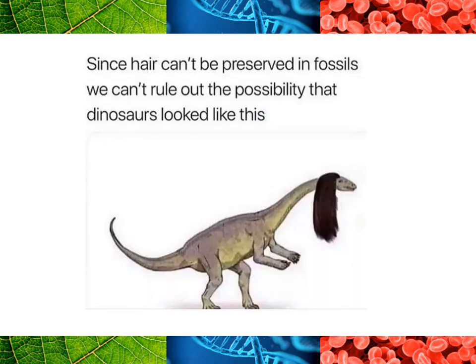The point being that fossils generally will only form of very hard tissue — so things like bone or teeth. Skin, muscle, and hair don't fossilize. So we can't be entirely sure what dinosaurs actually looked like in terms of soft tissue.